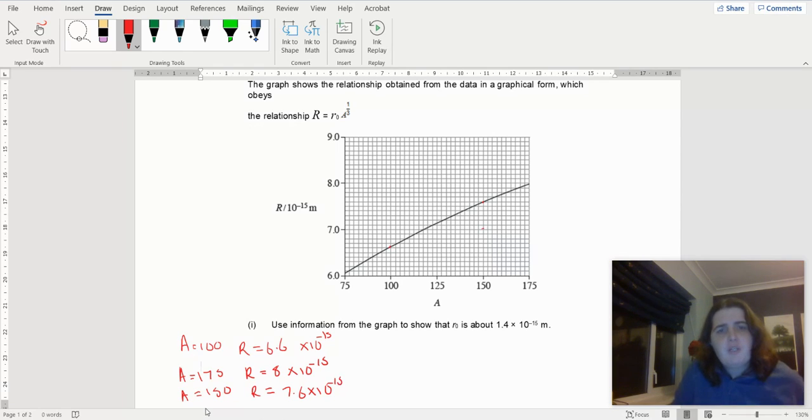So what I'm going to do is I'm going to use this formula, and I'm going to find R₀ for each one. So R₀ equals R over A to the power of a third.